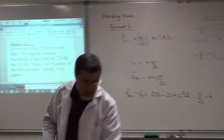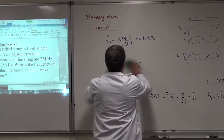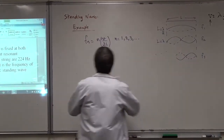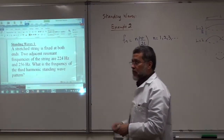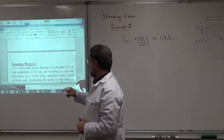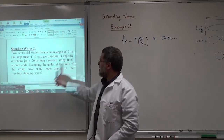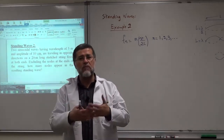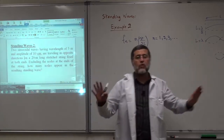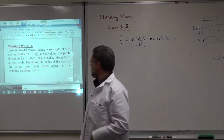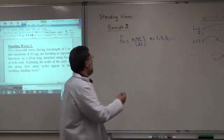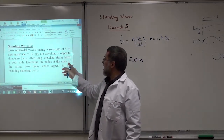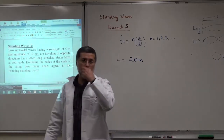Example 2: Two sinusoidal waves with wavelength 5 m and amplitude 10 cm travel in opposite directions on a 20-meter-long stretched string, producing standing waves. Excluding the nodes at the ends of the string, how many nodes appear in the resulting standing wave?